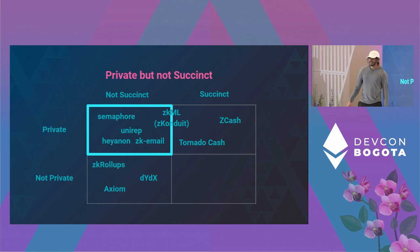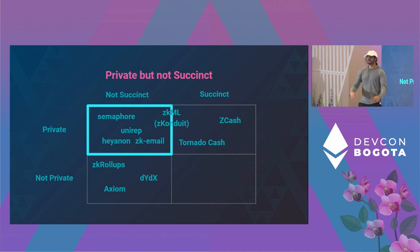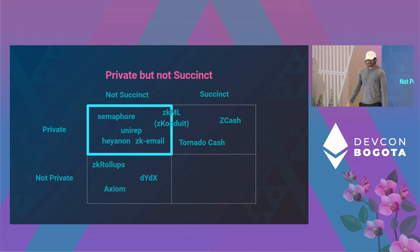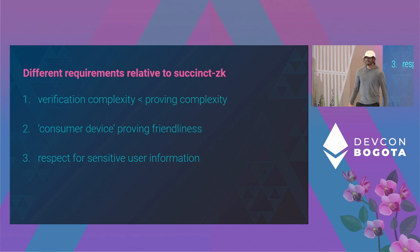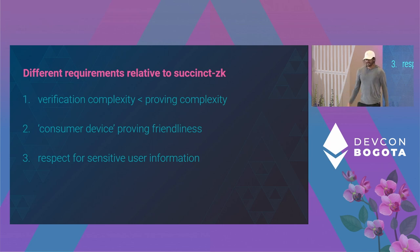Some examples: Semaphore, a project from PSE, is about group membership — proving private group membership so you can prove you are one of the people in a group. This can be used for pseudonymous message boards and similar applications. ZK email involves proving that mail servers — which often sign the email body — allow you to create a zero-knowledge proof that you received an email with certain properties. And it's not obvious that the zero-knowledge proof in either of these cases needs to be interpreted by a chain. Even consumer hardware is more powerful than a chain for verification.